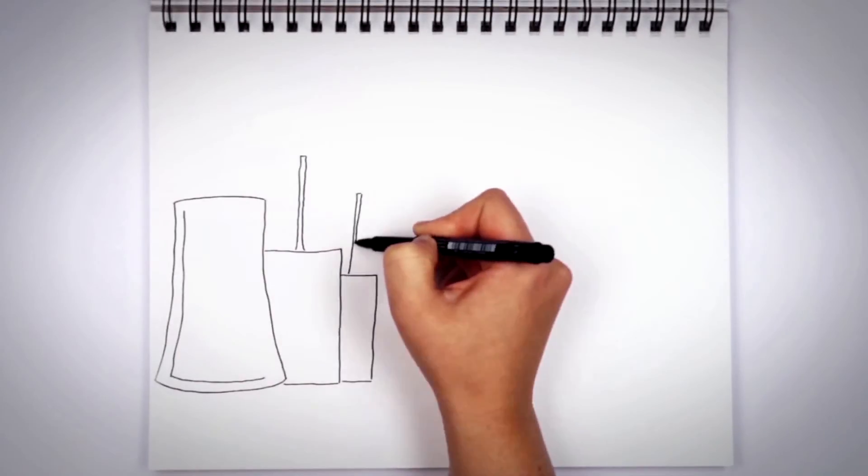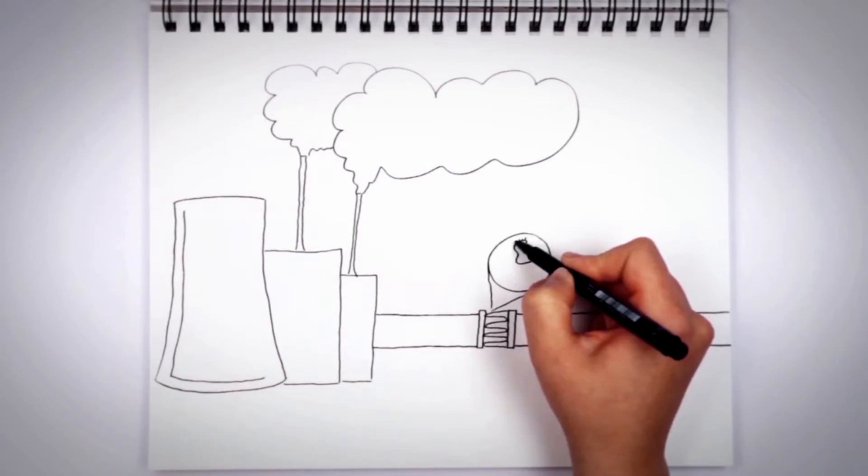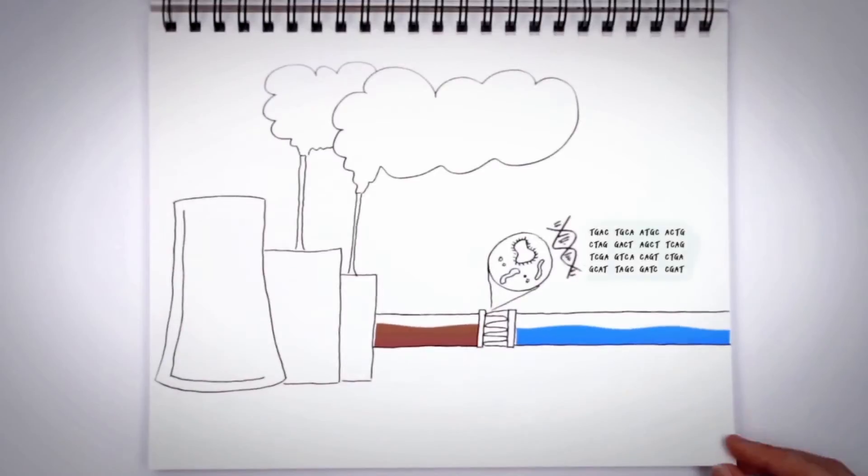Microbes also play a role in the mining sector, where water treatment is a huge challenge. Some microbes act like tiny water purifiers. Using genomics to study their DNA, we can find better ways to use microbes in water treatment systems. This has the potential to help companies save up to $100 million per facility.